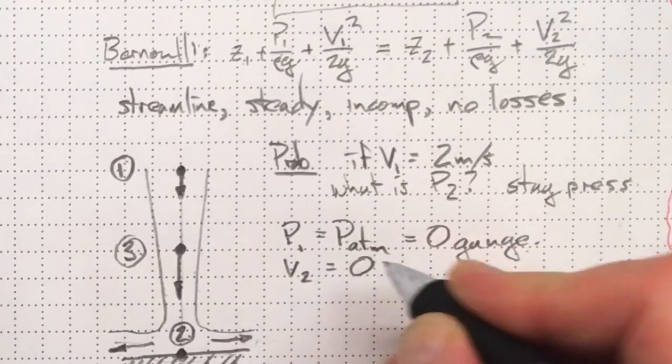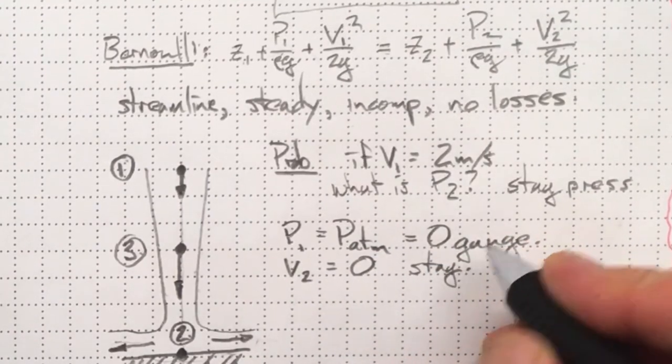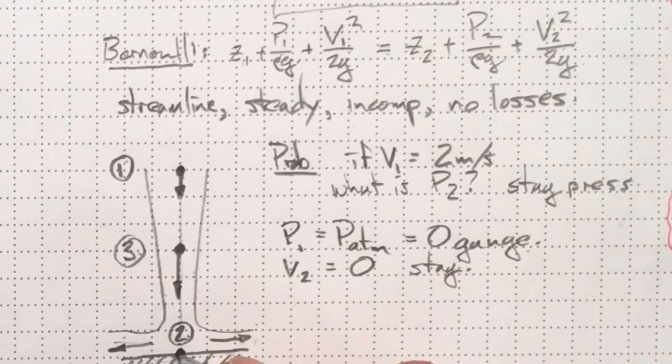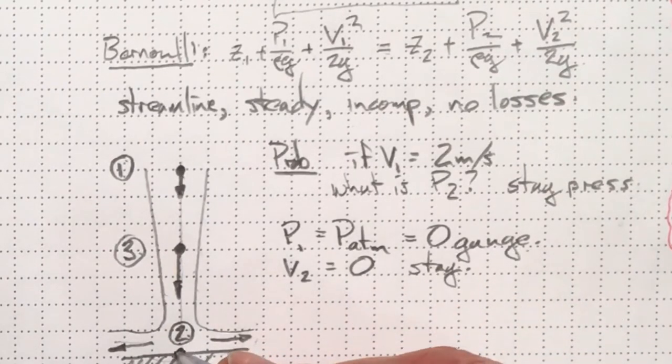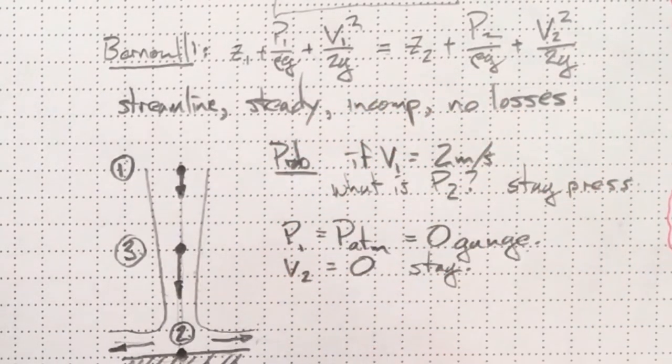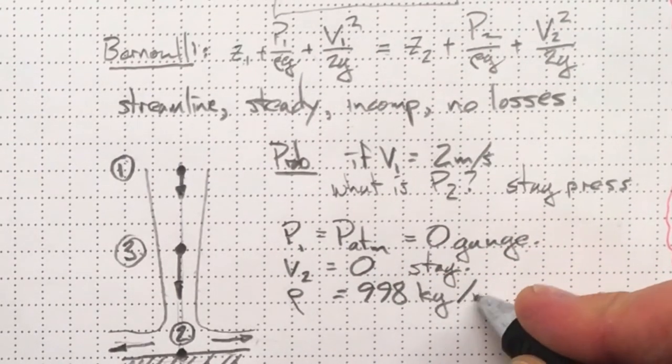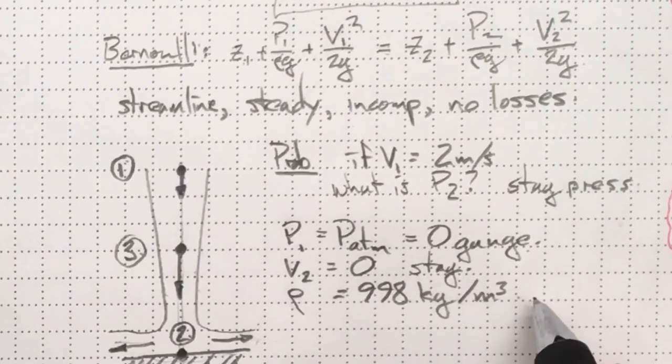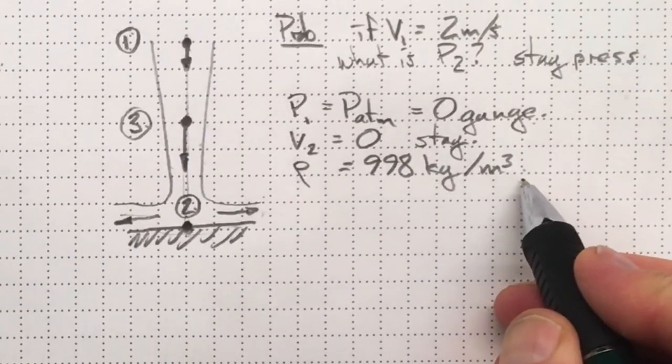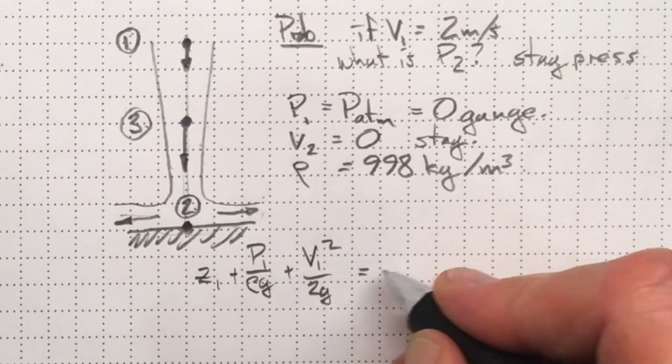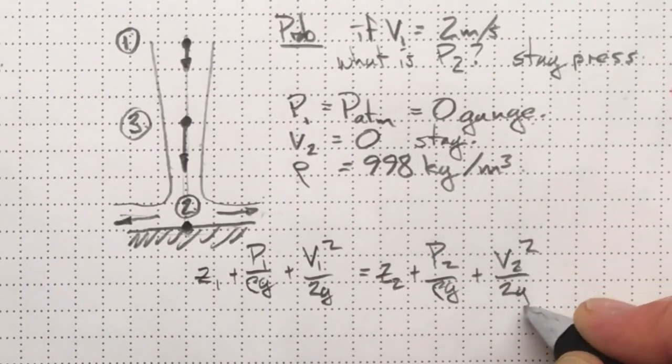We know that the velocity at location two is zero because it's a stagnation point. The flow has come to a stop at the plate on the center line here. Density for water at about 20 degrees Celsius is 998 kilograms per cubic meter.